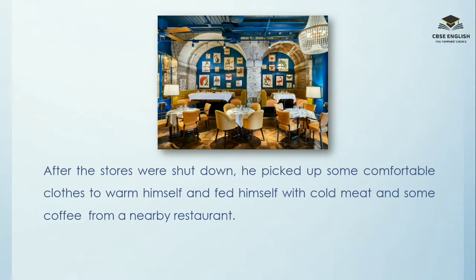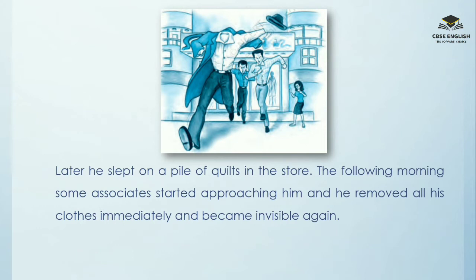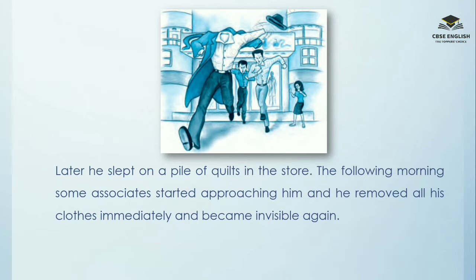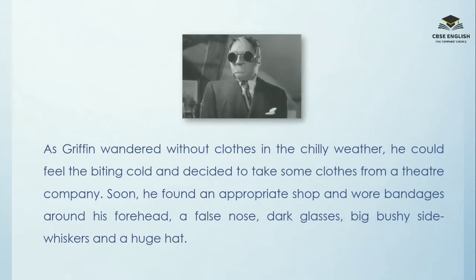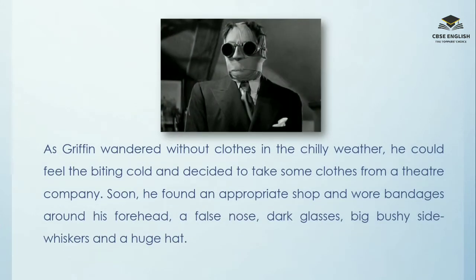After the stores were shut down, he picked up some comfortable clothes to warm himself and fed himself with cold meat and some coffee from a nearby restaurant. Later, he slept on a pile of quilts in the store. The following morning, some associates started approaching him, and he removed all his clothes immediately and became invisible again. As Griffin wandered without clothes in the chilly weather, he could feel the biting cold and decided to take some clothes from a theatre company. He found an appropriate shop and wore bandages around his forehead, a false nose, dark glasses, big bushy side whiskers and a huge hat.